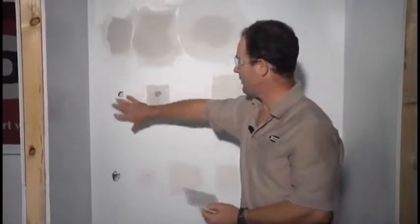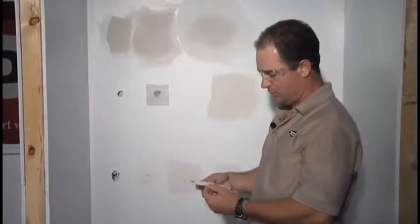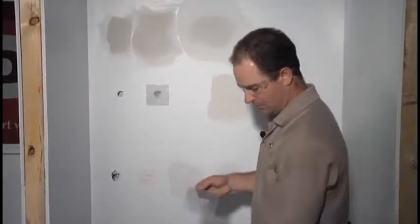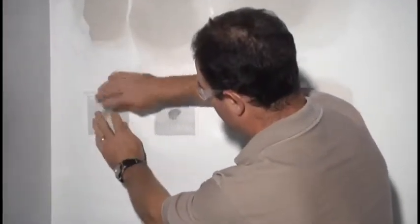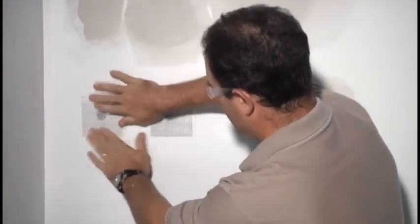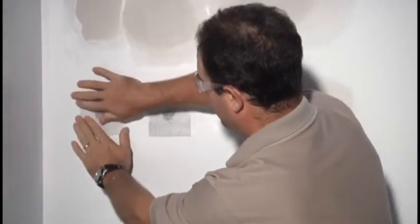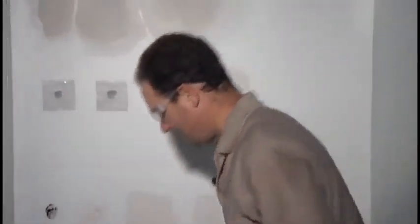You take the patch, whichever seems to work best for your size. This is a small one so we use the 4 inch. Just take off the backing, place it over your hole. Press it in slowly and it should be fine at that point.